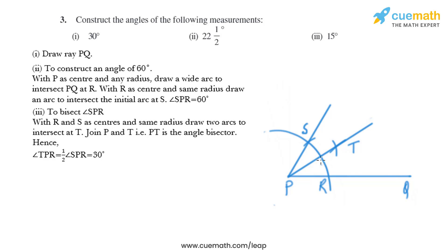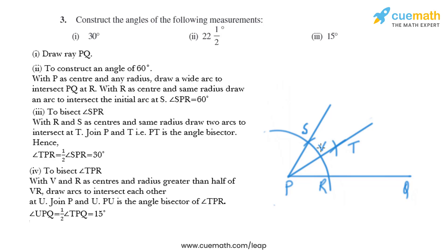We have angle TPR equal to 30 degrees. To get 15 degrees, we bisect angle TPR. We take this point as V. With V and R as centers and radius greater than half of VR, draw arcs intersecting each other at U. Join PU — PU is the angle bisector of angle TPR — so angle UPQ equals 15 degrees.